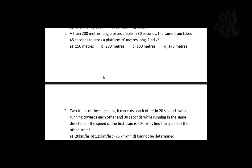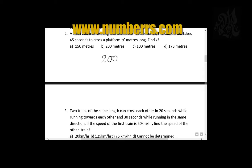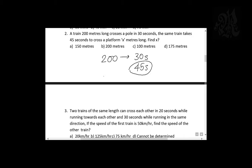The train is 200 meters long and crosses a pole in 30 seconds. Same train takes 45 seconds to cross a platform of x meters. To cross yourself — 200 meters — you take 30 seconds. To cross a bridge you take 45 seconds; in those 45 you already cross yourself, so only for the bridge you take 15 seconds. Since you cover 200 meters in 30 seconds, in 15 seconds you cover 100 meters. So x = 100 meters.